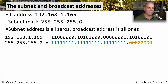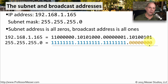Every network has a network or subnet address, and every network has a broadcast address. You can calculate these by setting the bits in the host part of the mask. If you set all host bits to 0, you get the subnet address. If you set all host bits to 1, you get the broadcast address.